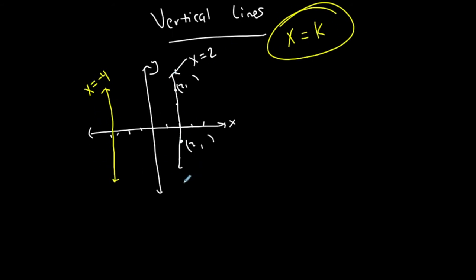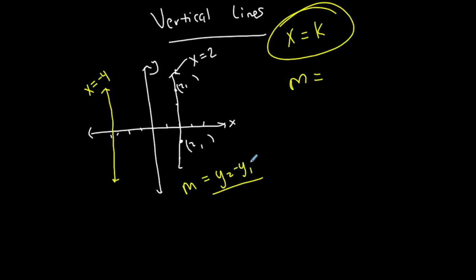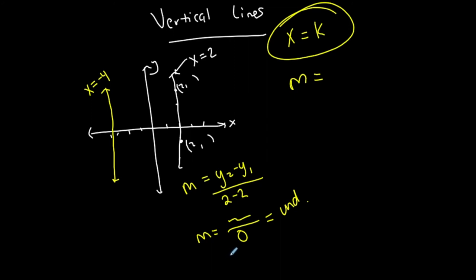Notice that none of these vertical lines are functions — they don't pass the vertical line test, so I'm not going to write them in function notation. It's just x is equal to some number. Now let's talk about the slope. All the x-coordinates are the same, so using the slope formula — y2 minus y1 over x2 minus x1 — all the x-coordinates are 2, so the denominator is always going to be 0. We cannot have 0 on the bottom of a fraction. We call that an undefined slope, or UND for short. So all the slopes for vertical lines are undefined.